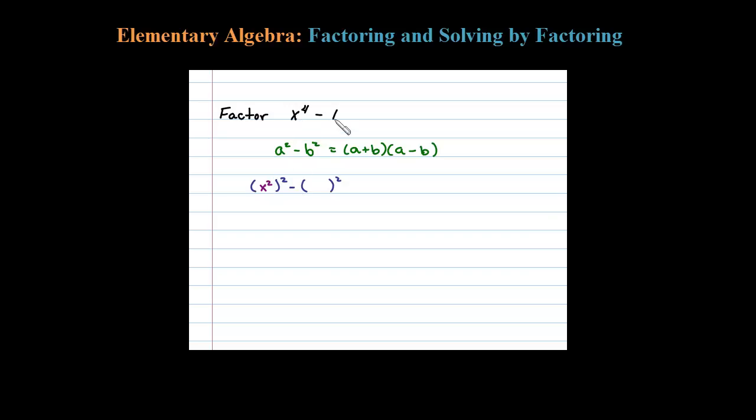Now what squared is 1? That's pretty easy to see, it's just 1. So a is x squared and b is 1. This factors as a plus b: x squared plus 1, times a minus b: x squared minus 1.